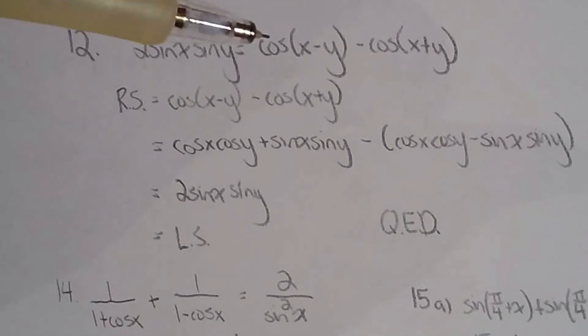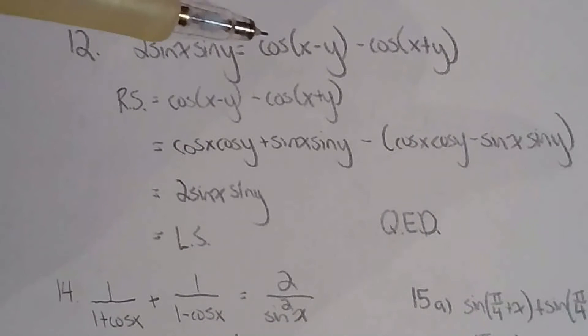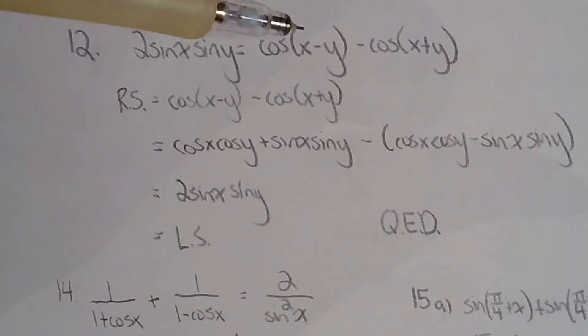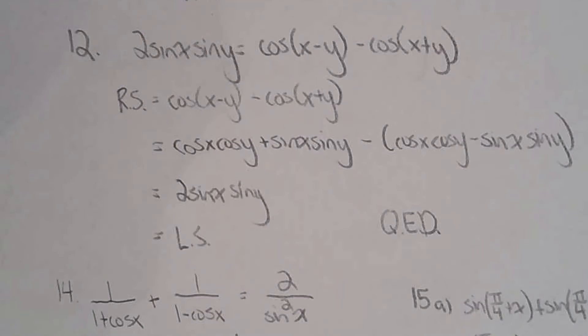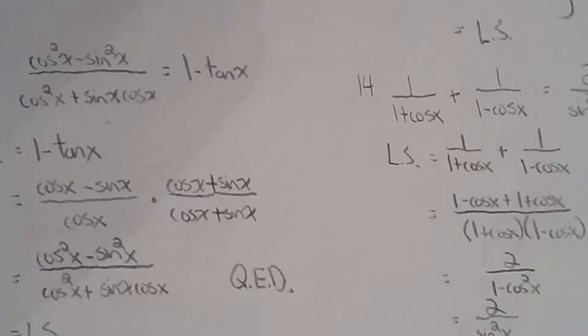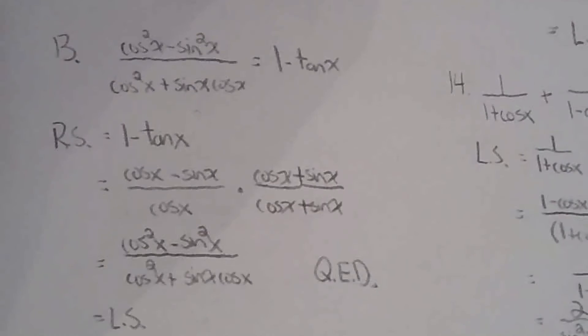Number 12 is very similar to a previous question: subtraction formula for cosine, addition formula for cosine — don't forget the brackets — simplify, and you're done.